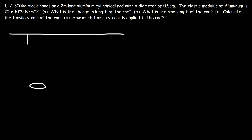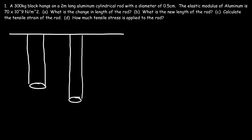So let's say this is the rod before we added the 300 kilogram block to it. Now once we add the block, the rod is going to increase in length. We need to calculate the change in length — delta L — which is the difference between the original length L0 and the new length L final.